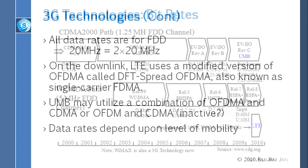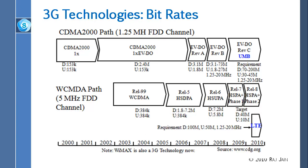Another important point: these data rates assume stationary objects — these are the best-case selling numbers. In reality, data rates depend on the level of mobility. Just as WiFi is advertised at 55 megabits but you rarely exceed 20 megabits in practice due to collision overhead, these cellular data rates are similarly nominal numbers.